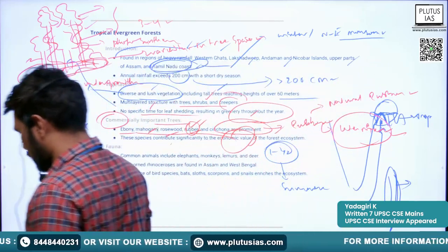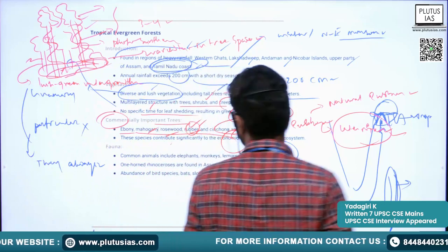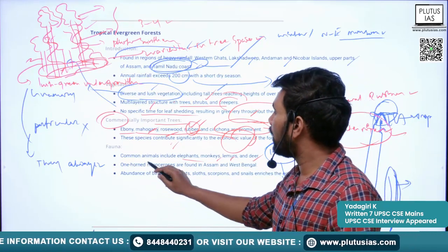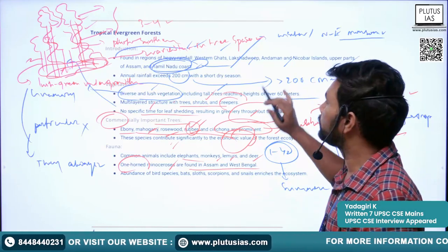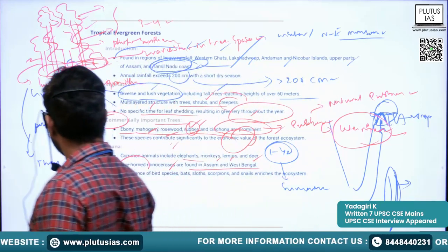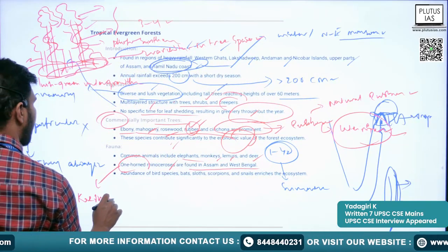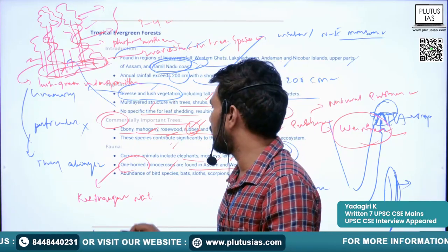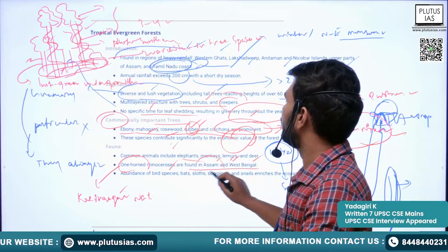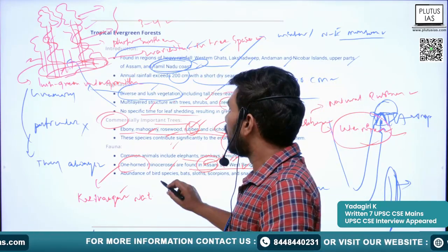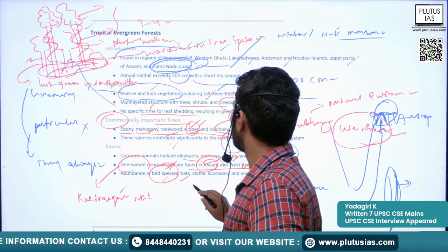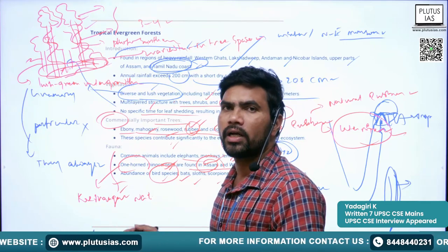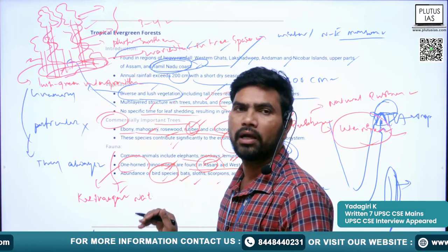The fauna found in tropical evergreen forests includes elephants, monkeys, lemurs, and deer. The one-horned rhinoceros is found in Assam and West Bengal — notably in Kaziranga National Park and Manas National Park. There is also an abundance of bird species, bats, sloth bears, scorpions, and snails, all enriching the ecosystem.